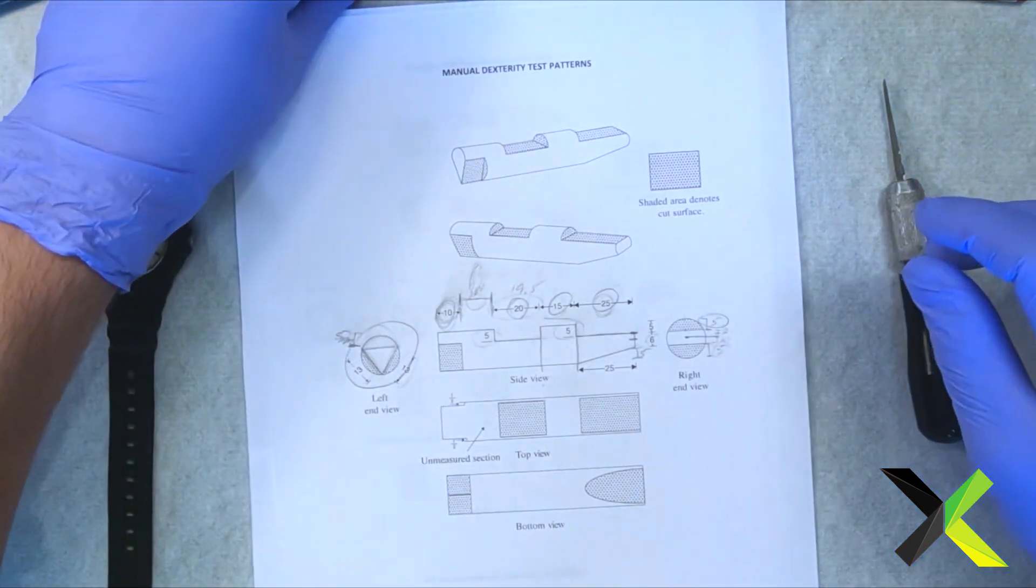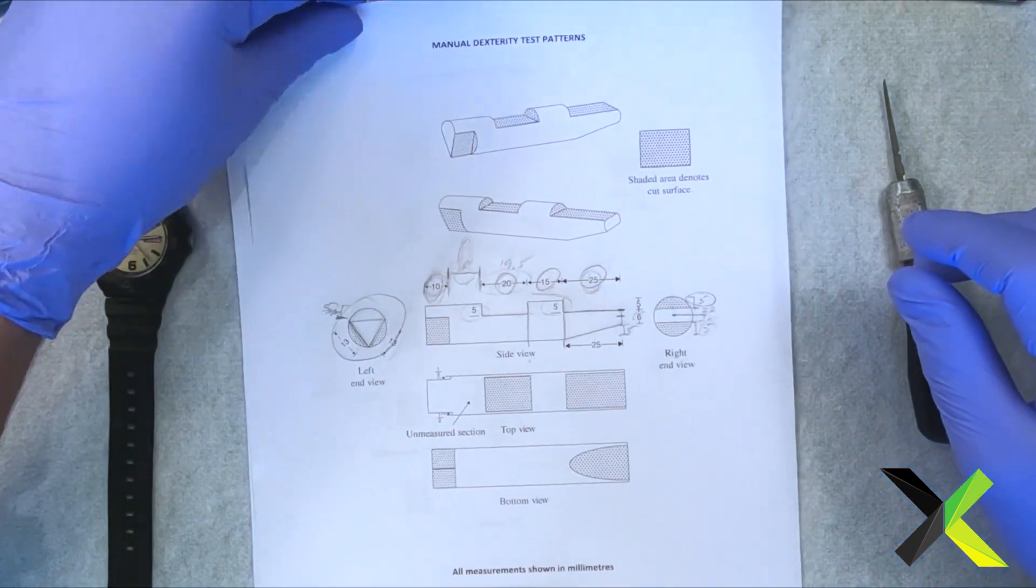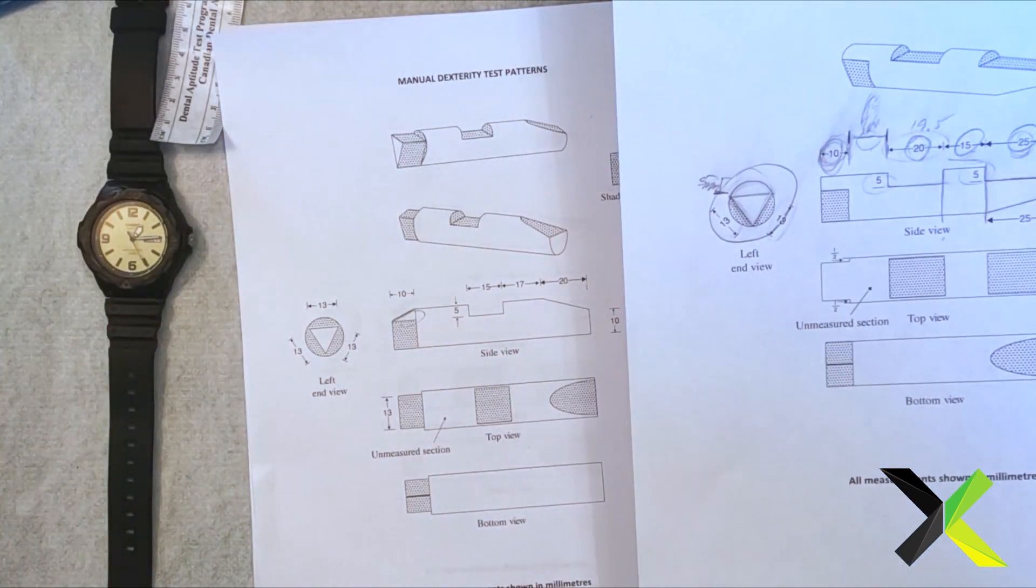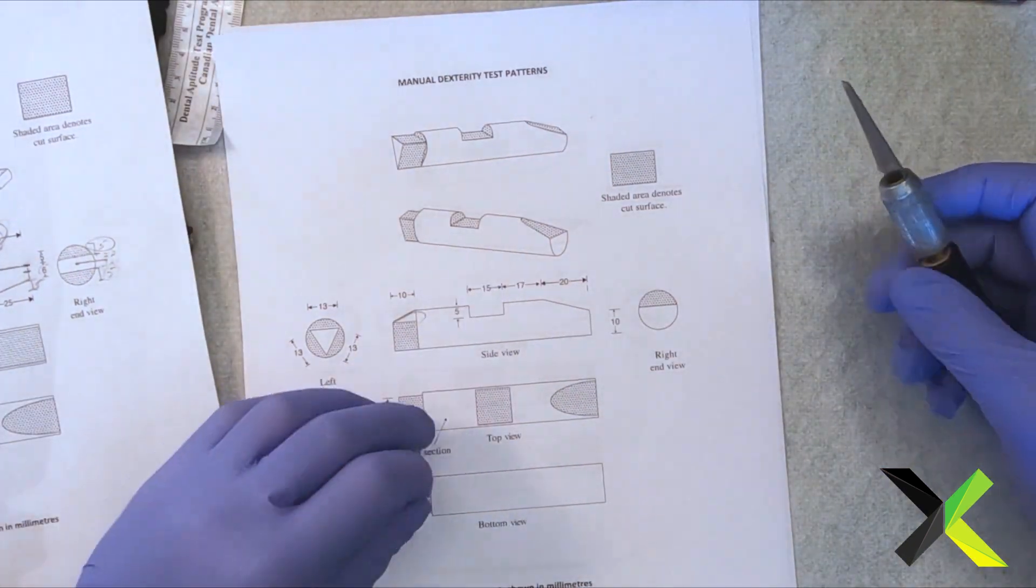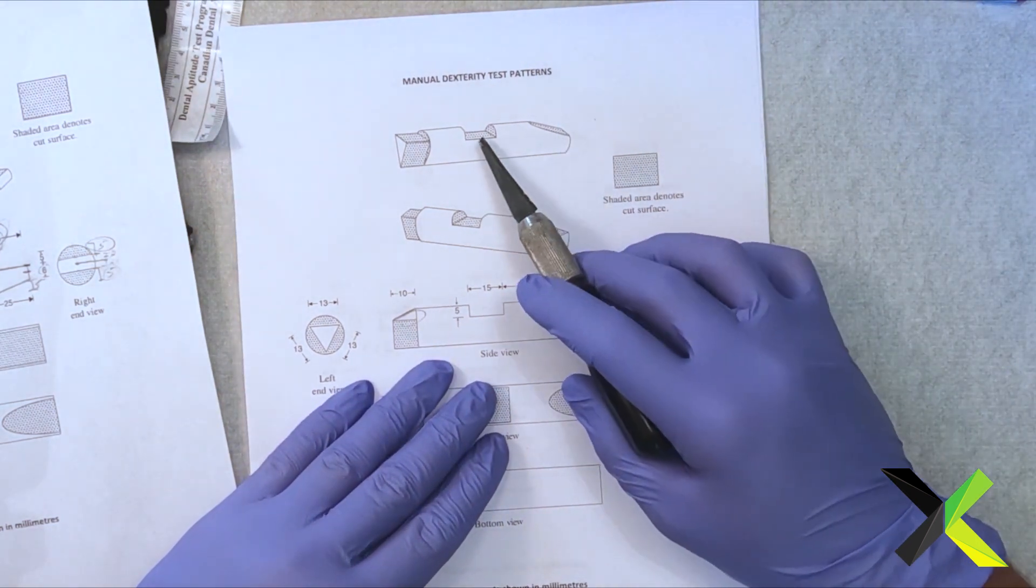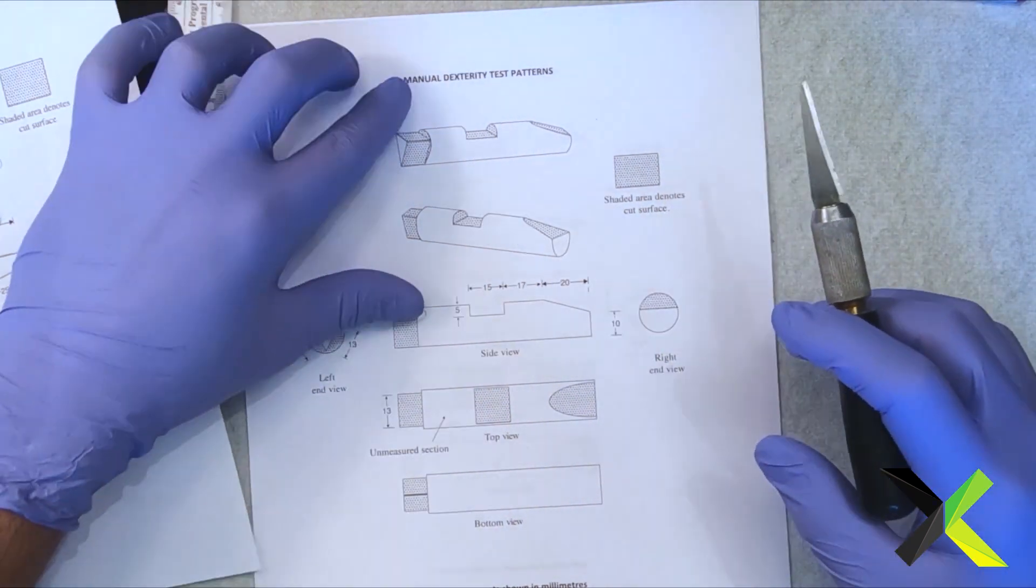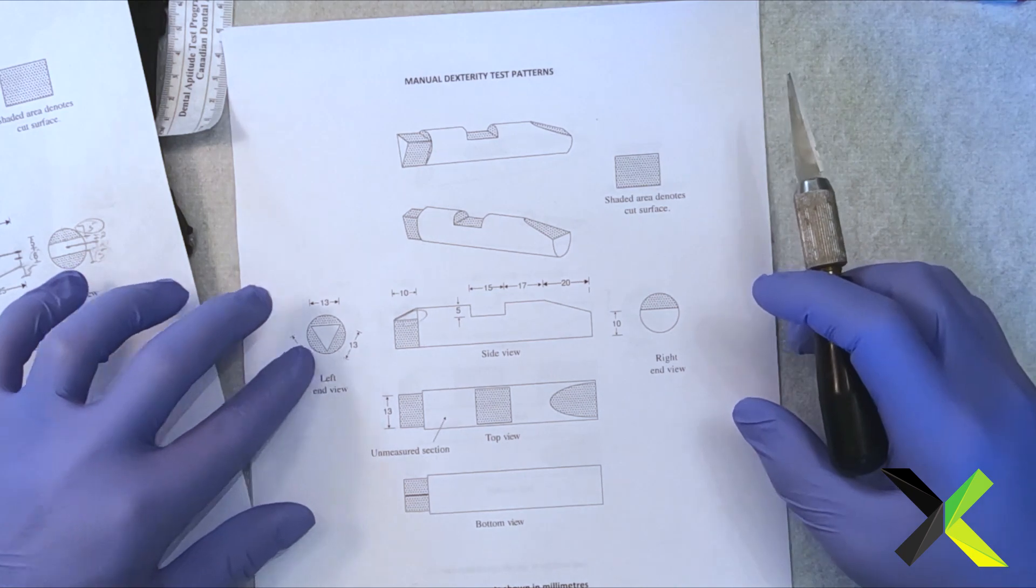But there's some differences with each pattern, so we're gonna go over each one of those. Here we have a flute, we have a saddle, and we have a complex complete triangle at the end.